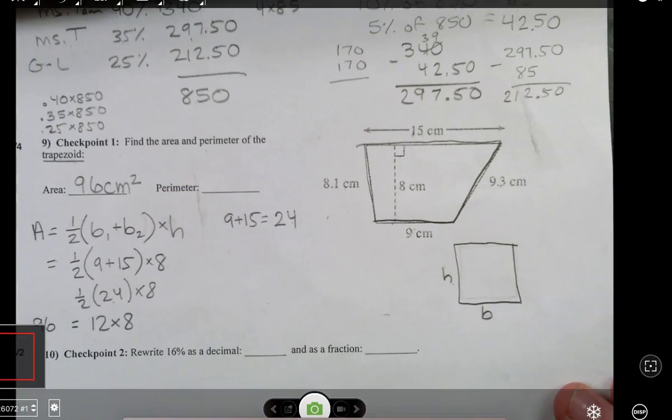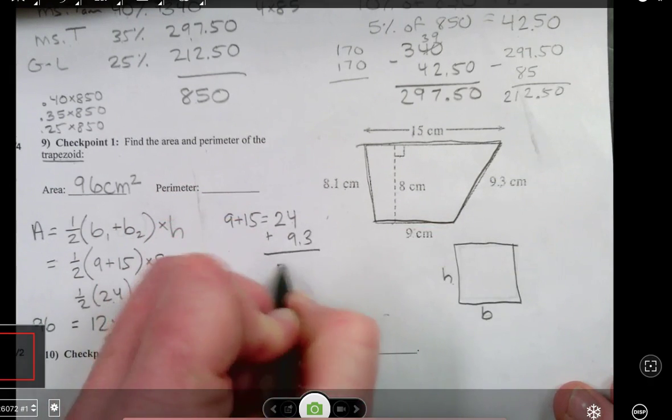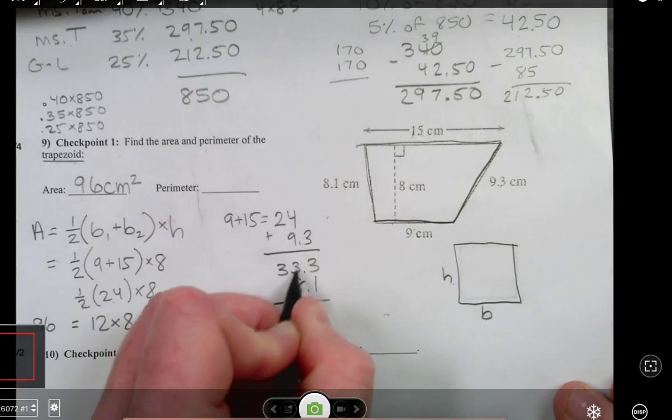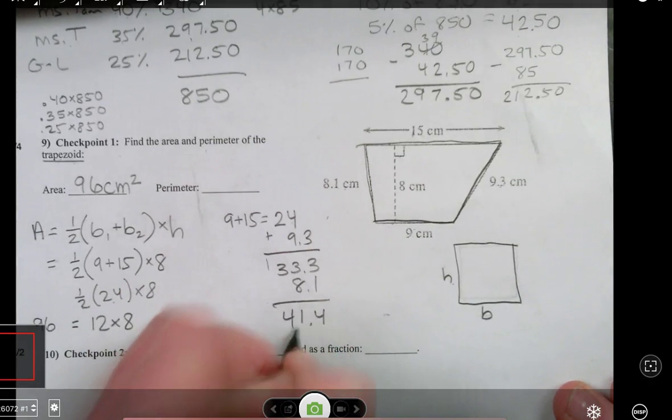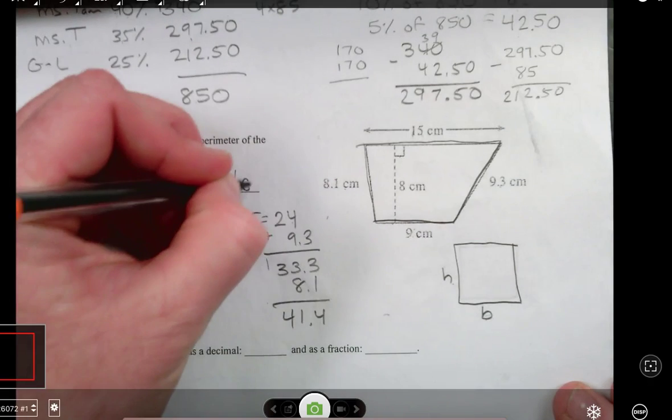We have to add 9 plus 15. That's 24. We know that from the last problem. Plus 9.3, which is 33.3, plus 8.1. And I get 41.4 centimeters.